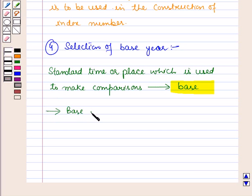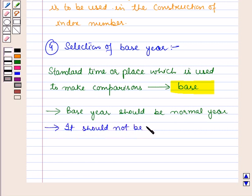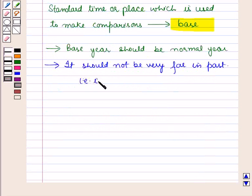The following things are kept in mind for selecting a base year. First, the base year should be a normal year and no unusual event like earthquake, flood, or war should have taken place in that year. Secondly, it should not be very far in the past; that is, it should be close to the current year.